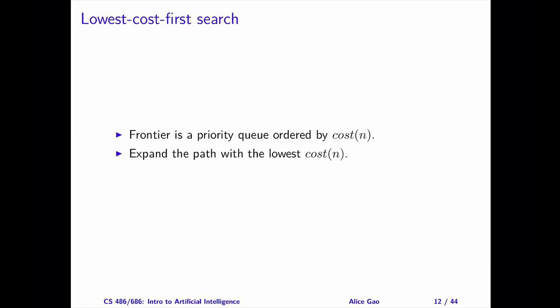So far, the uninformed search algorithms focus on finding any solution. There's little guarantee on the quality of the solution found. DFS has no guarantee. BFS and IDS are guaranteed to find the solution with the fewest edges, but this path is not necessarily the one with the least total cost.